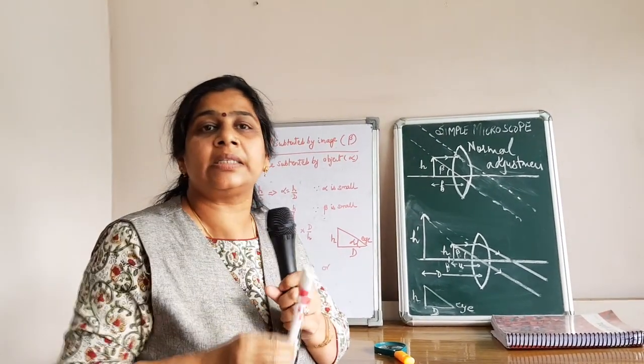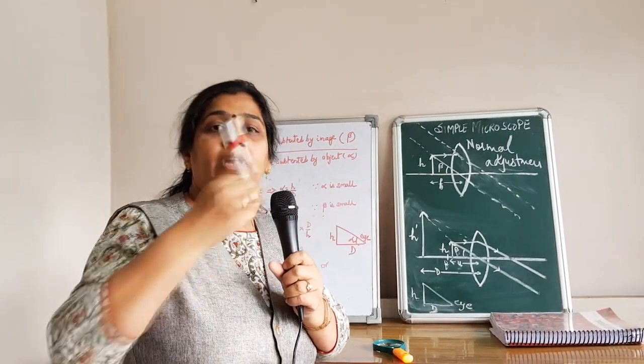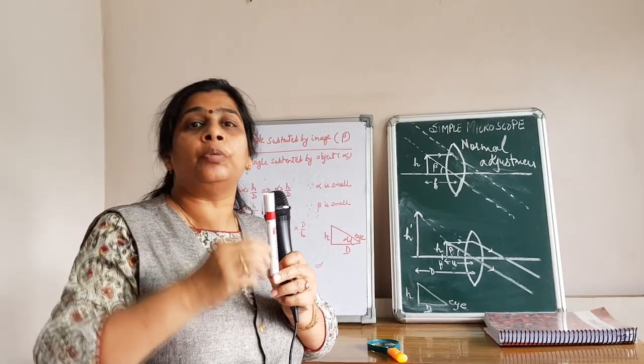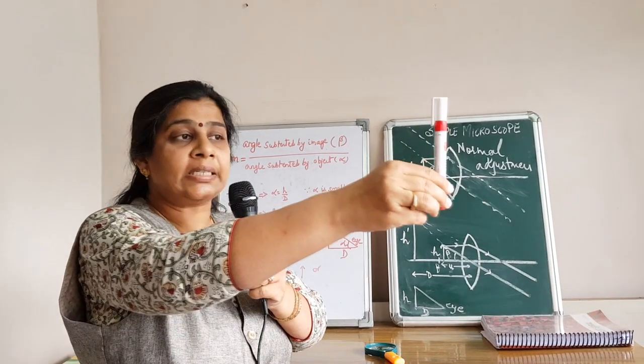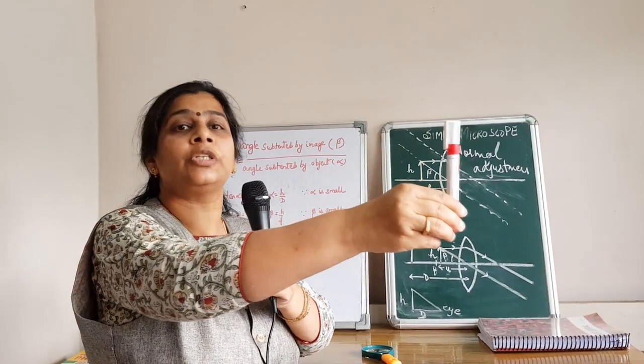As you are already aware, what is least distance of distinct vision? The distance at which the human eye is able to see the object very clearly. That distance is called least distance of distinct vision and its value is 25 cm.